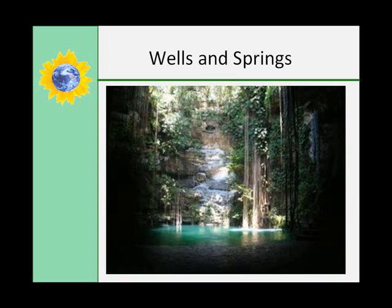Groundwater is naturally filtered by the ground and is usually clear and drinkable if it hasn't been polluted by human or animal wastes or poisonous materials. When a hole is dug into the ground beneath the water table, a well is formed. If the water table is above the surface of the ground, as on a hillside, you may have a stream. When a permeable layer dips below the ground between layers of impermeable rock, an artesian layer is formed.